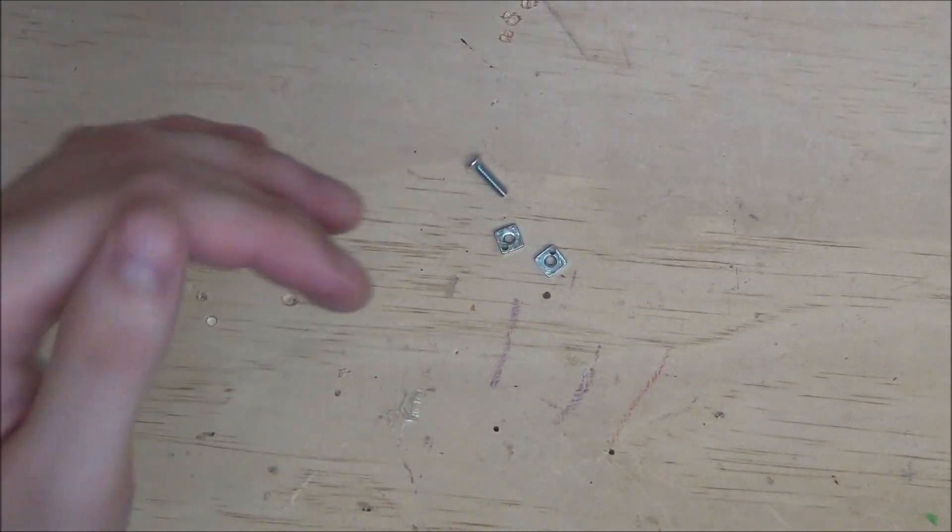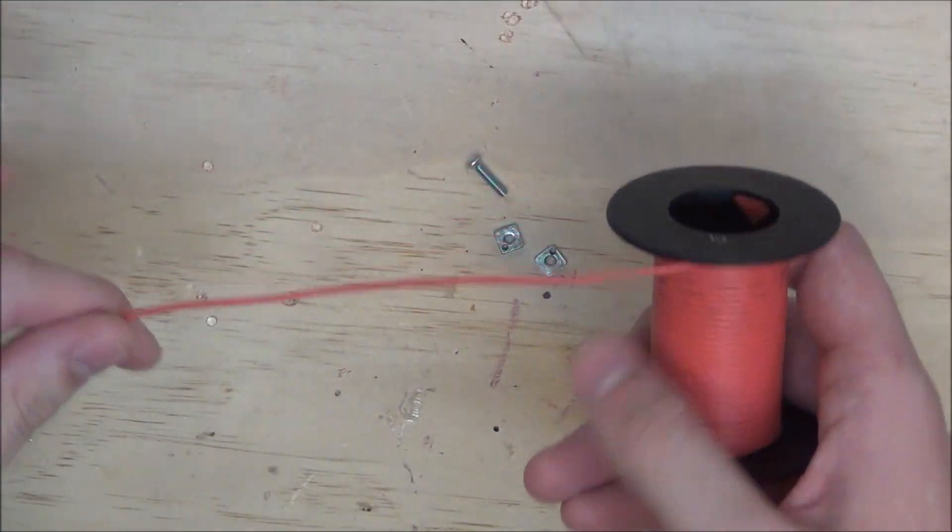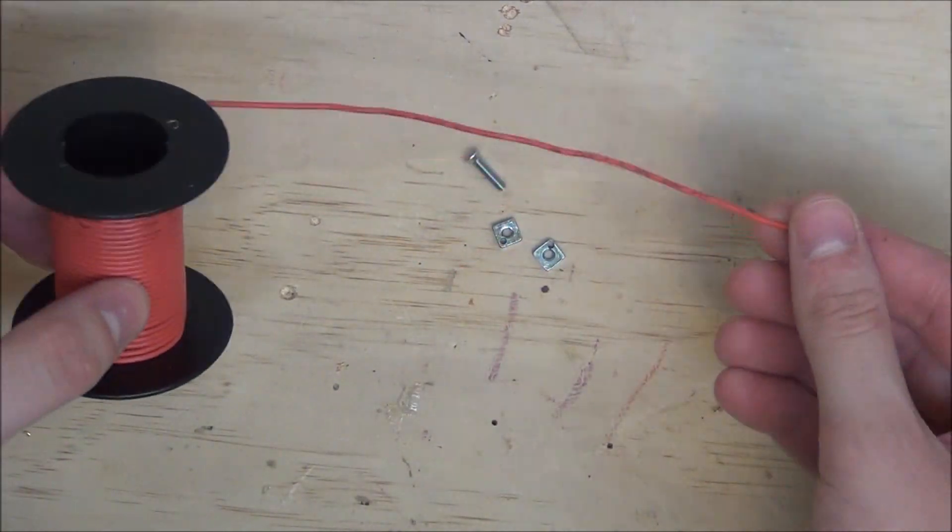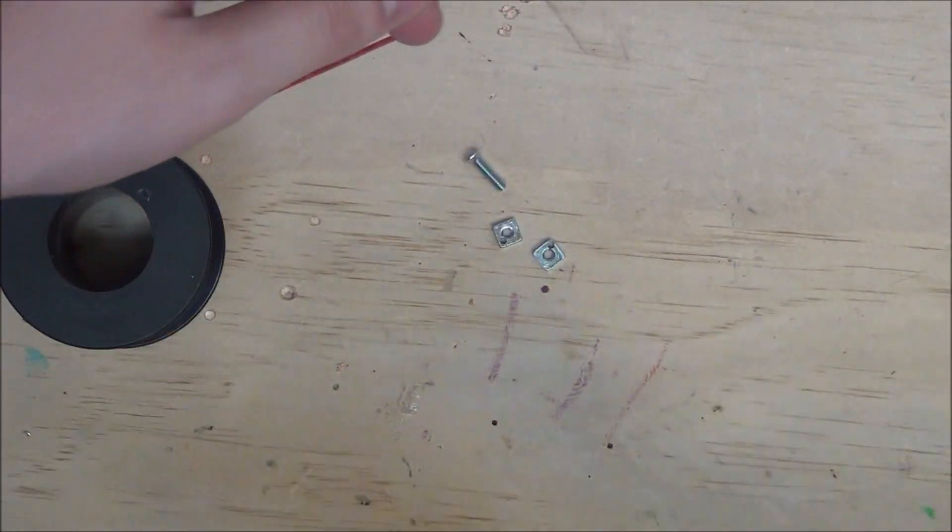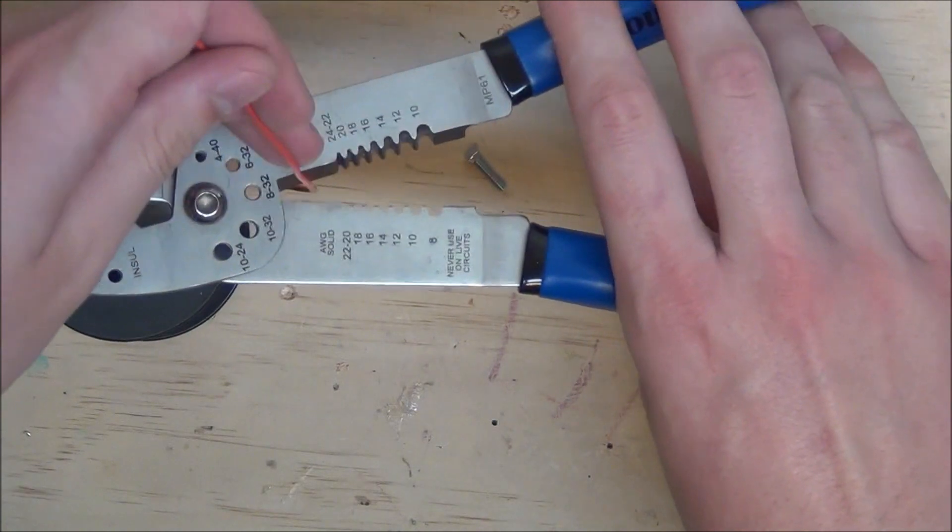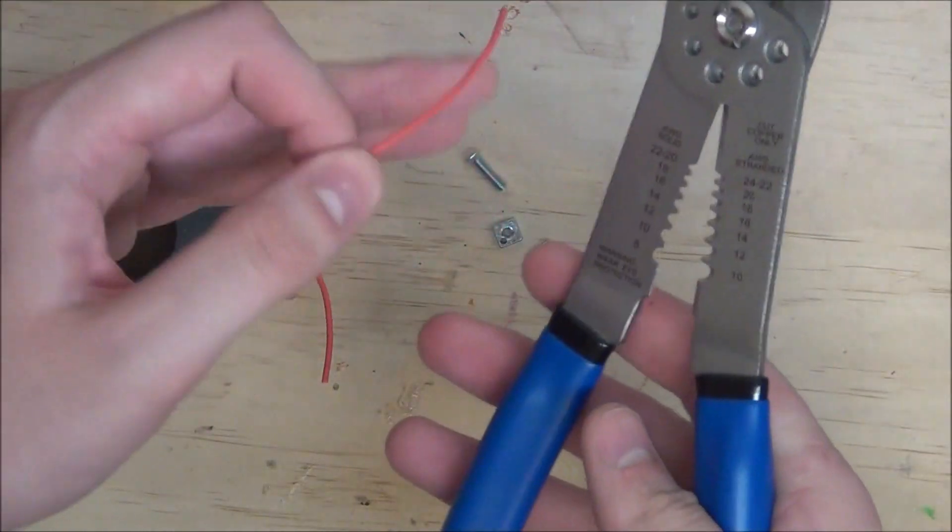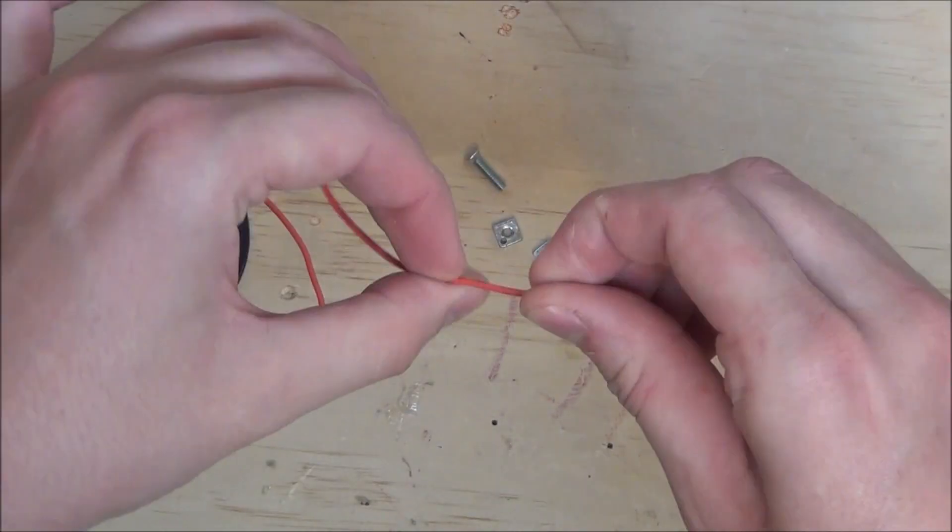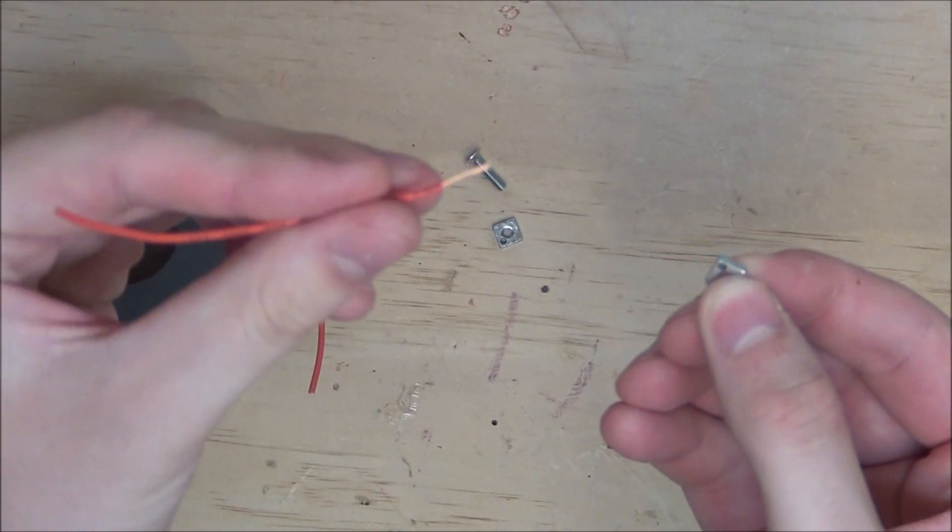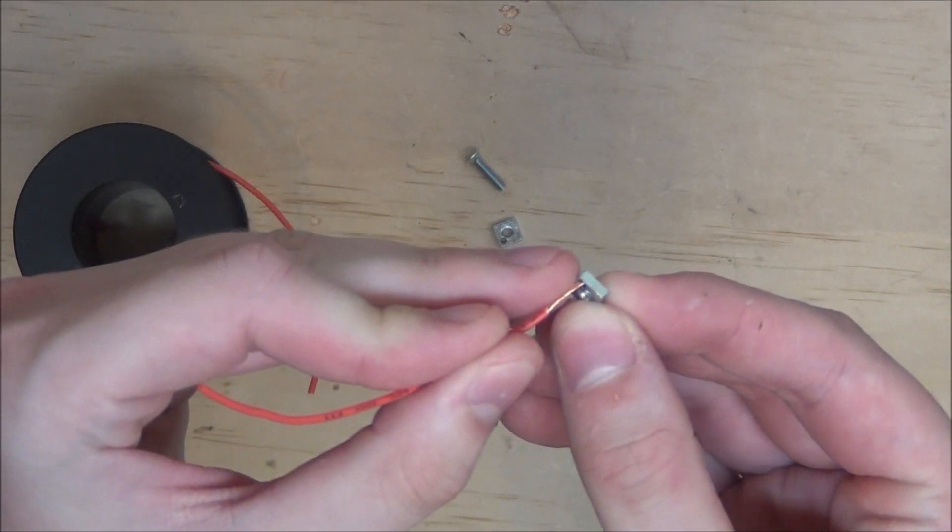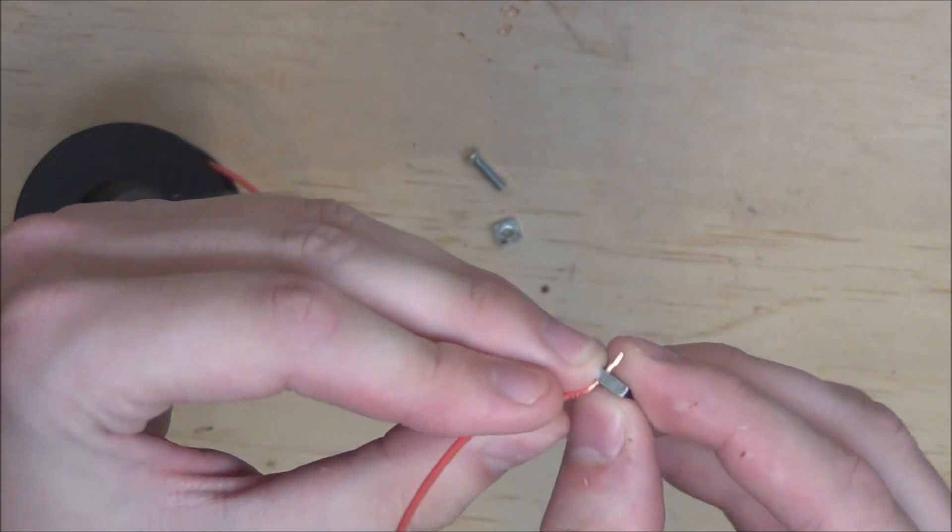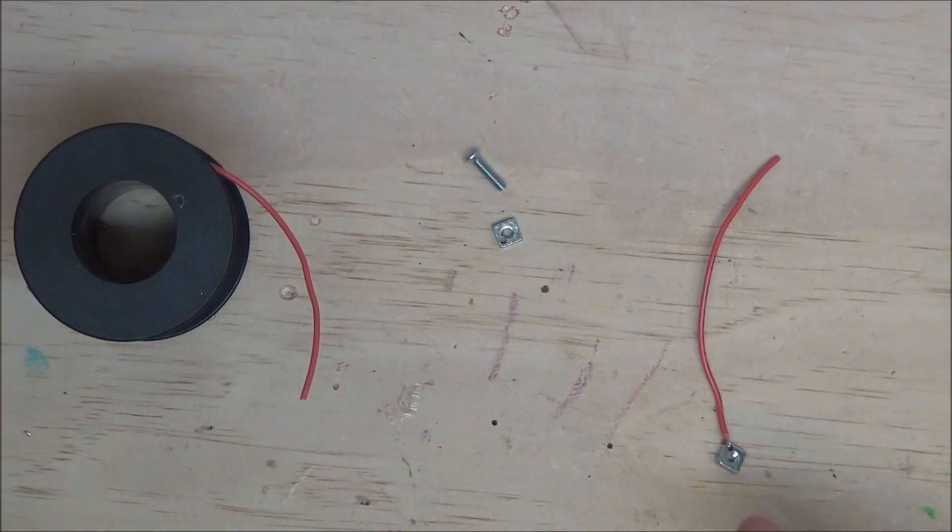Now, with the holes drilled, it is finally time to attach our leads. I'm just using 22-gauge stranded wire, and all we're going to have to do is cut out about a 2 1/2, 3-inch long piece like this, and then strip one of the ends. Perfect. Now, we'll feed that in through the hole in the nut we just drilled, loop it back onto itself like that, then solder it in place.